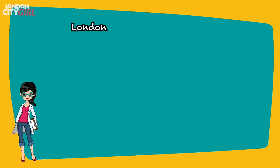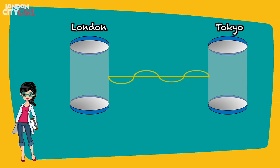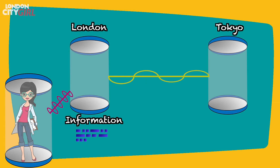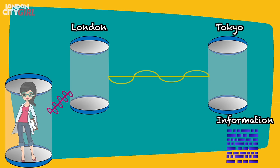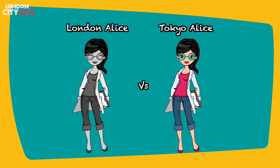Imagine that human quantum teleportation became a reality. Say Alice wants to travel from London to Tokyo. Two chambers of entangled particles would be in each city. Alice would step into a scanning device and the quantum state of each individual particle would be measured in relation to the chamber of particles in London. This information would be relayed to Tokyo where the chamber of particles would be manipulated to replicate the quantum state of each of Alice's individual particles, creating an exact replica. Meanwhile, the original Alice in London has been destroyed. As the original Alice dies in the process but is reconstructed at her destination in Tokyo — is that still Alice? Tokyo Alice is identical to the last atom to London Alice and is in full possession of London Alice's knowledge, experience and memories, while the original London Alice no longer exists to debate the issue.